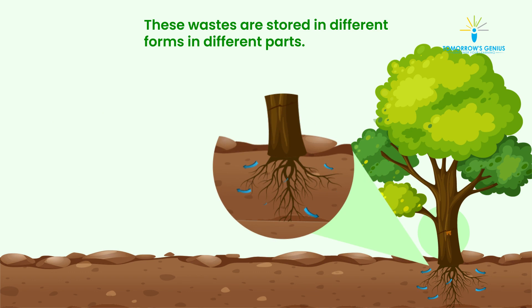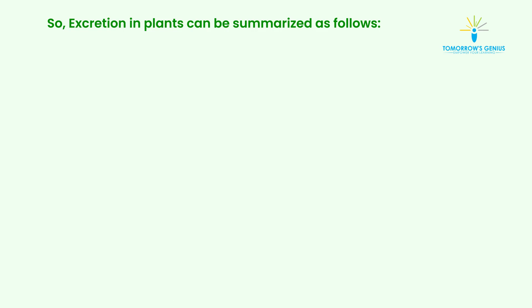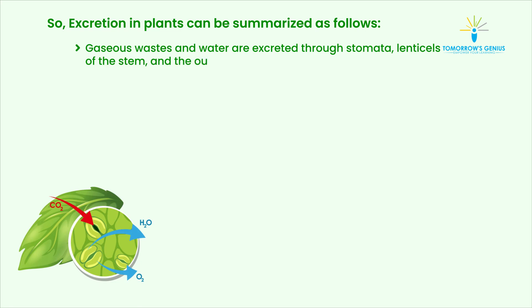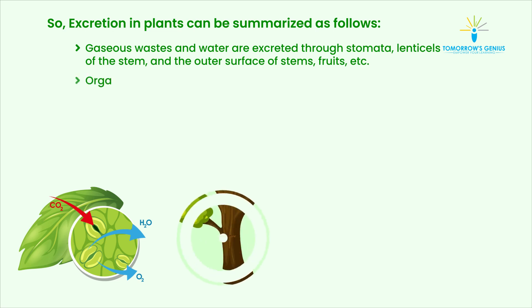Some of the excretory products are diffused directly into the soil with the help of roots. That is how plants excrete their gaseous wastes and excess water through the stomata, lenticels of the stem, and other outer surfaces of stems and fruits.